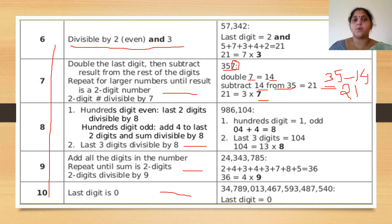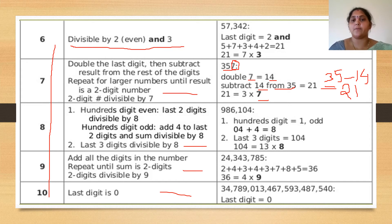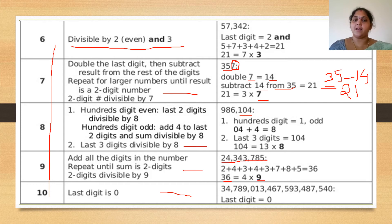For 8, check the hundreds digit — if it is even, check if the last 2 digits are divisible by 8; if it is odd, add 4 to the last 2 digits and check if the result is divisible by 8. For 9, add all the digits — if the result is divisible by 9, the number is divisible by 9. For 10, the last unit digit must be 0.